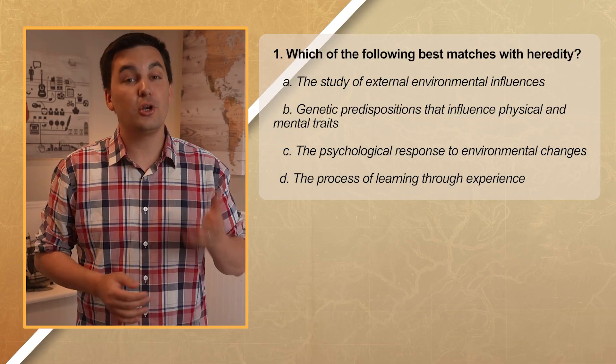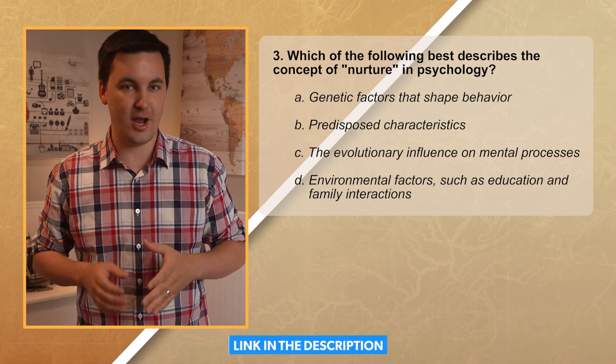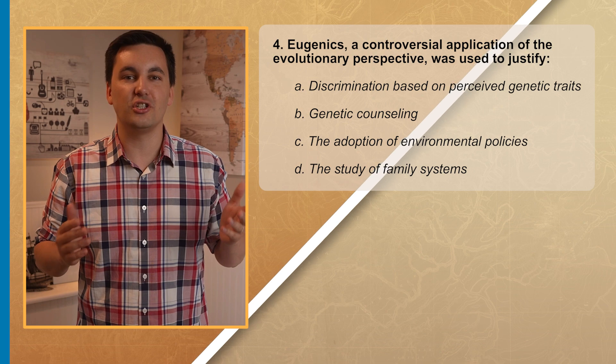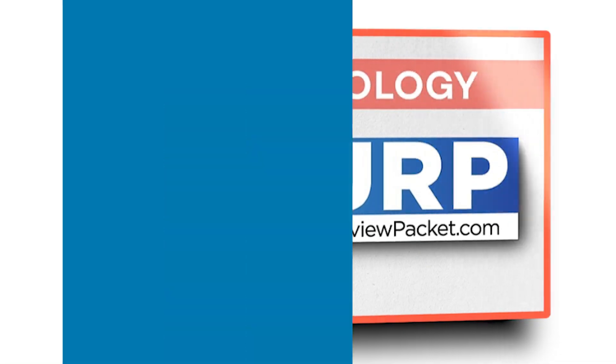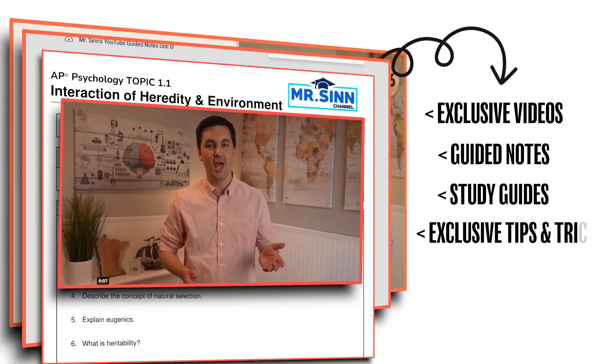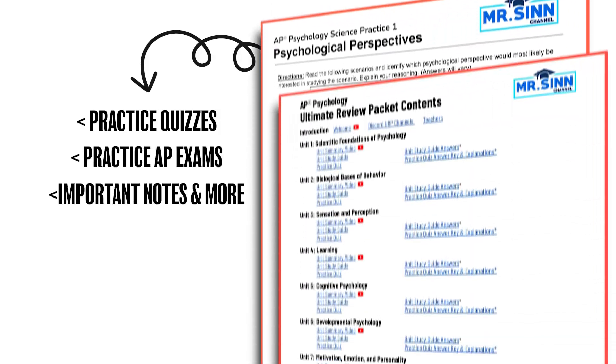So it seems like my original question was a little more complicated than a simple answer, but hopefully now you have a better understanding of heredity and the environment. Remember, if you need more help with your AP Psychology class, check out my Ultimate Review Packet — one of the best online resources to help get you an A in your class and a 5 on the AP National Exam. As always, I'm Mr. Syn — thank you so much for watching, and I'll see you next time.